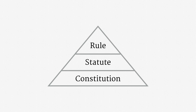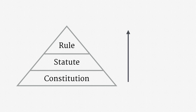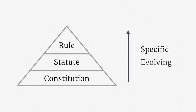I'd like to make a few generalized observations about these three layers of American law. First, moving up the layers, law tends to be more specific. The security and privacy guarantees of the Constitution speak in broad generalities; statutes and rules, by contrast, can be extraordinarily precise. Second, again moving up the layers, law tends to evolve faster. Interpretations of the Constitution change slowly, while statutes and rules can shift quite quickly.